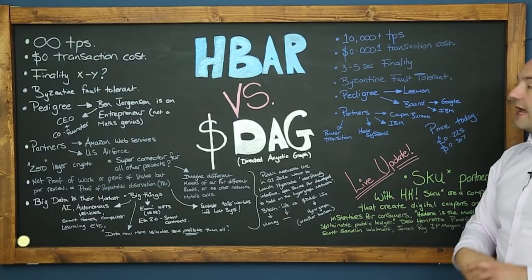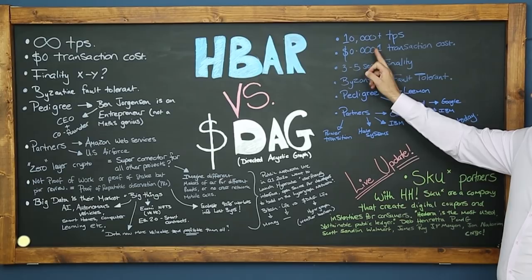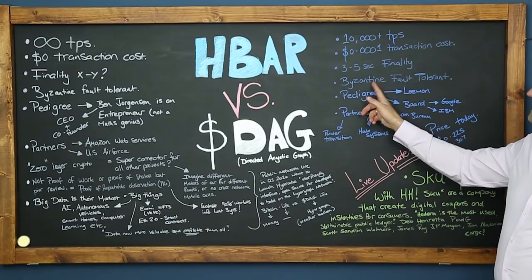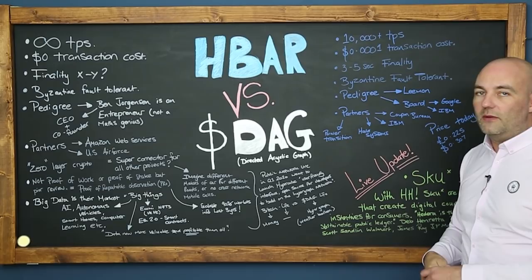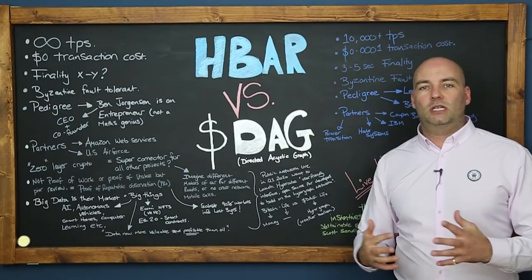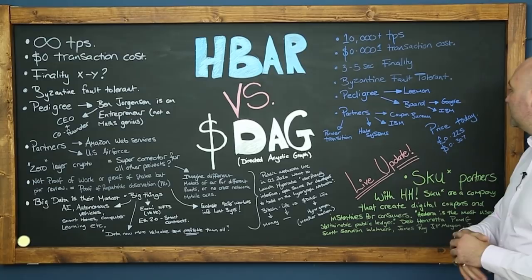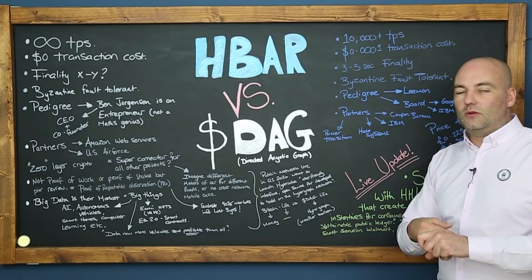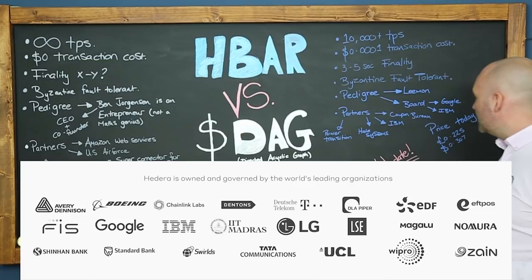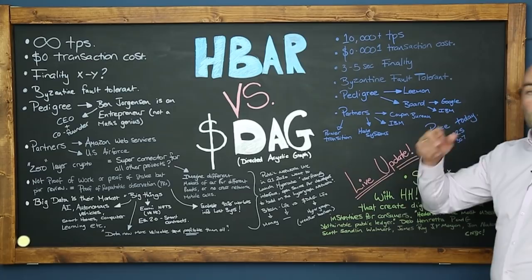So with that said: HBAR — 10,000 TPS (transactions per second), 0.0001 of a dollar transaction cost, three to five seconds of finality, Byzantine fault tolerant. The pedigree — if you're familiar with Hedera Hashgraph you'll know about Leemon Baird, who is a modern-day mathematical genius. He's not an adopter but the inventor, the father of Hedera Hashgraph. The governing board includes Google, IBM, and so on — some really impressive companies.